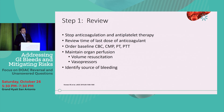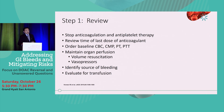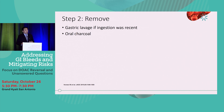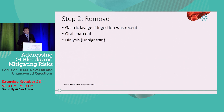Identify the source of bleeding — in this talk, we'll be discussing primarily GI bleeds. Evaluate for potential transfusion. Step two: Remove the DOAC. Consider gastric lavage if ingestion was very recent, though I'd consider that more for someone who attempted an overdose on a DOAC. Oral charcoal, but the rapid rate of absorption limits its efficacy and can inhibit your ability to perform endoscopy. Dialysis specifically for dabigatran, since it's 80% renally excreted.